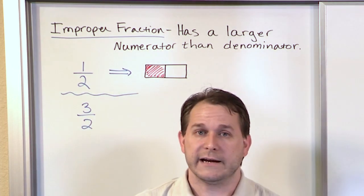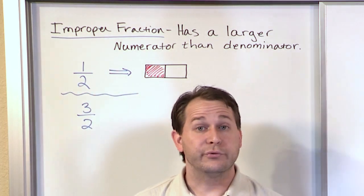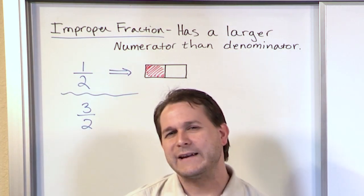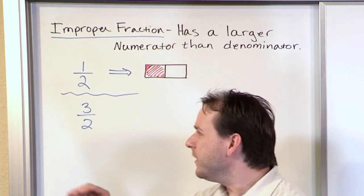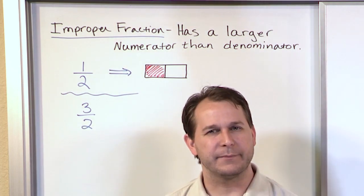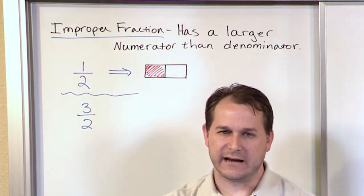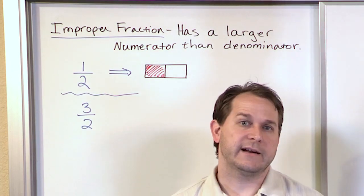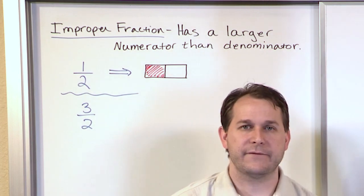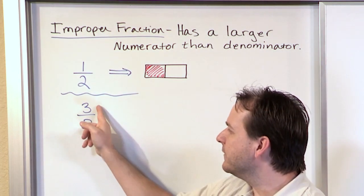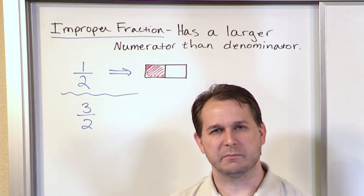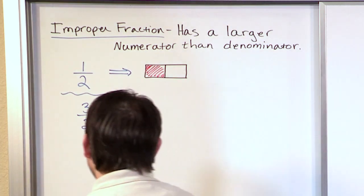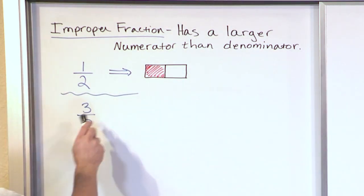Most fractions we see aren't like that. Most are like one-half, two-thirds, or three-fourths, where the top number is always smaller. So you have to ask yourself: what does it mean if I have three halves of something? I understand taking one half of a pizza — you cut it into two pieces and give one to a friend. But what does it mean when the top number is bigger than the bottom? It doesn't seem to make a lot of sense at first. Let's draw a picture and see what this actually means.